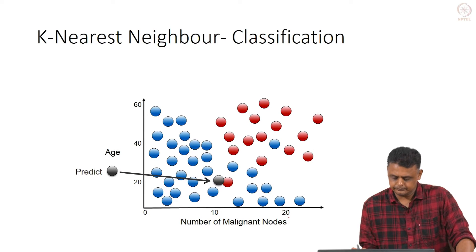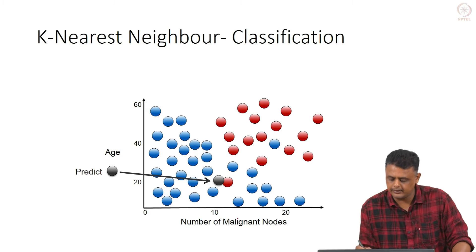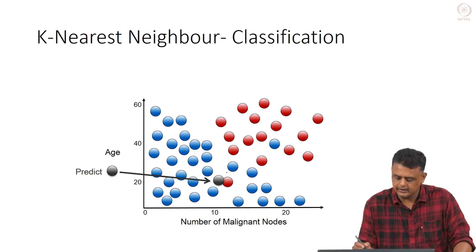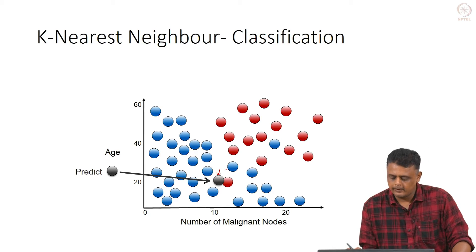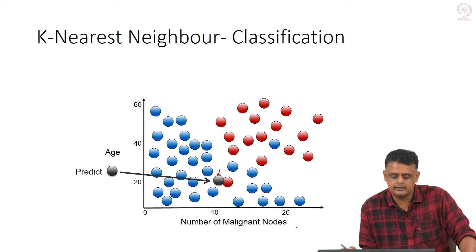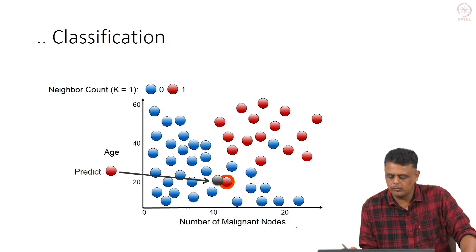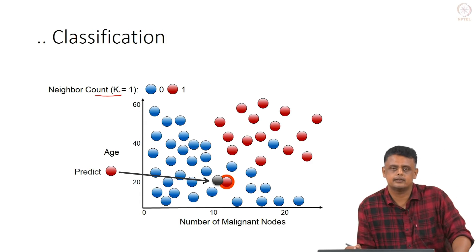What we want to do is predict when a new patient comes in — new patient data comes in. We have the age of the patient and the number of malignant nodes for that patient, and let us say it falls here in the dataset. We want to predict whether the patient will survive or not. K nearest neighbours has one hyperparameter, which is the neighbourhood count called K — that is why it is called K nearest neighbour.